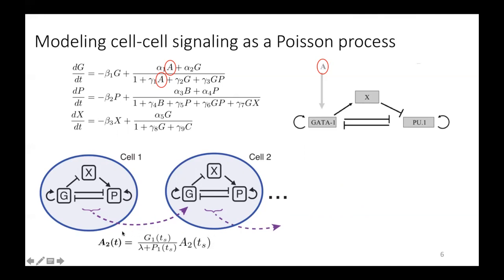And so that's how we arrived upon this equation. So at the time of a signal, we changed the value of the parameter A in cell two by multiplying it by this ratio of the expression of GATA1 over PU1 in cell one, plus some constant lambda.